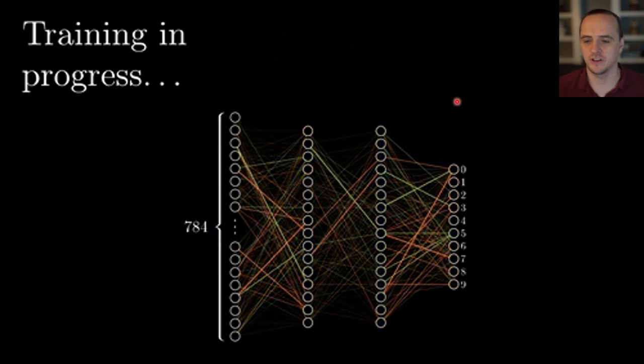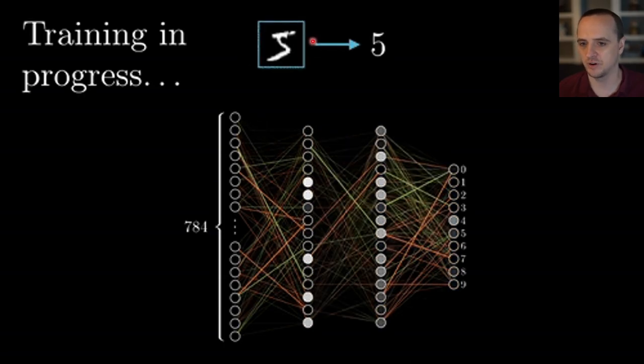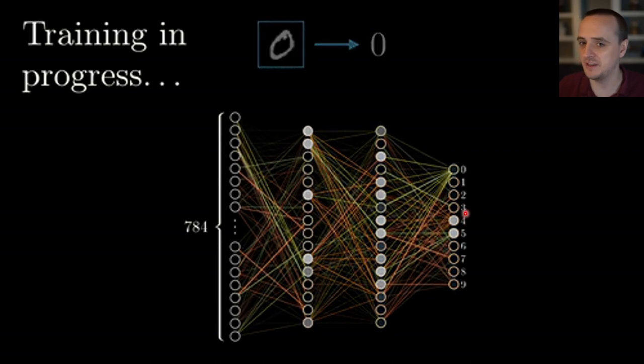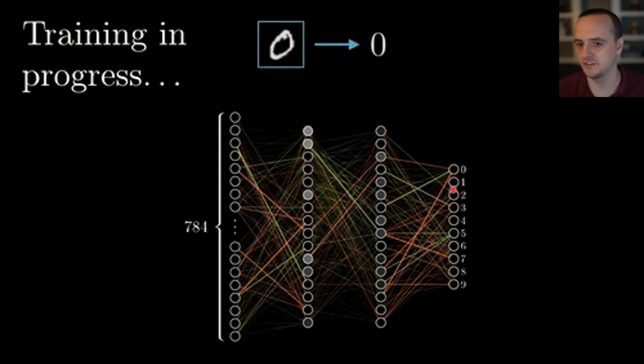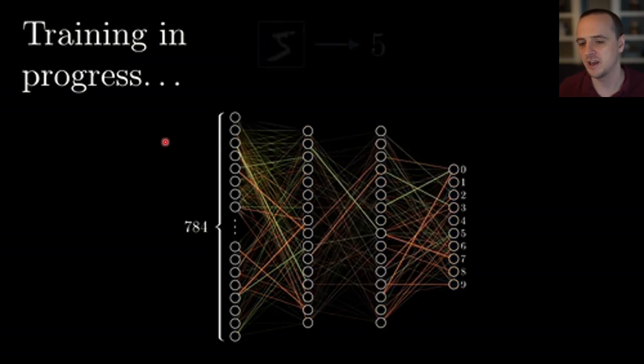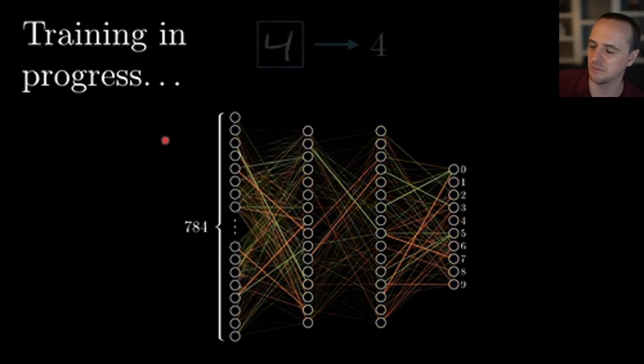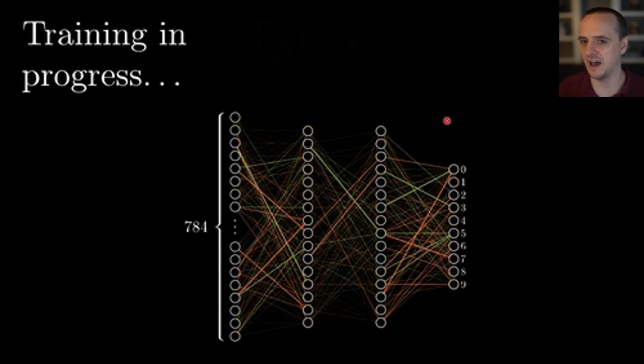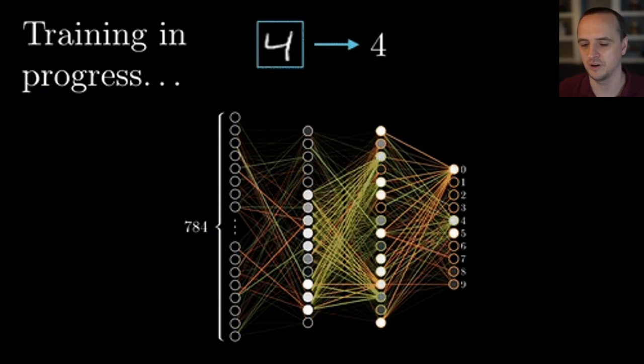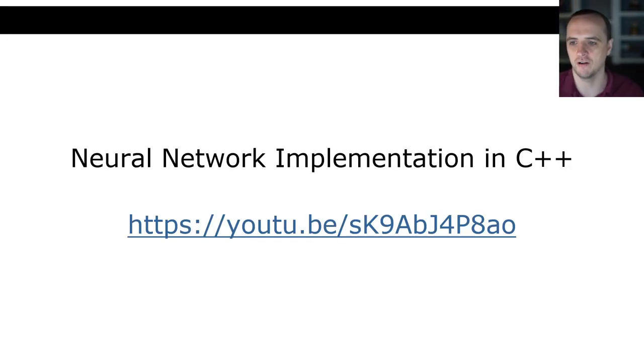What we get is that we pass in different inputs, get different values, and based on the error we do backpropagation with gradient descent to update weights backwards through the neural network. I realize I hand-waved over backpropagation and the exact mathematics, but this is not a calculus course where we take a week to explain exactly how it works. There's a great video called Neural Network Implementation in C++ — you don't need to know C++ to follow it. I'll paste the link in the chat. He implements a neural network from scratch with a basic form of gradient descent.